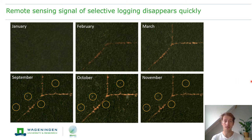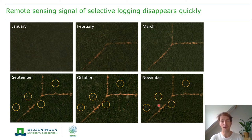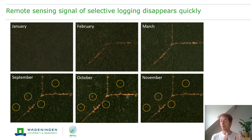Having only few observations available per year leads to delayed detection, which propagates into delayed enforcement activities. Another issue is that the remote sensing signal of many small-scale changes such as selective logging disappears quickly. Using high-resolution Planet data, we see logging roads developing in February–March, canopy gaps appearing from selective logging in September, still visible in October, but by November — just three months after first detection — they already disappeared due to canopy closure and understory regrowth. Without temporally consistent and high-frequency observations, we will miss many of these events.